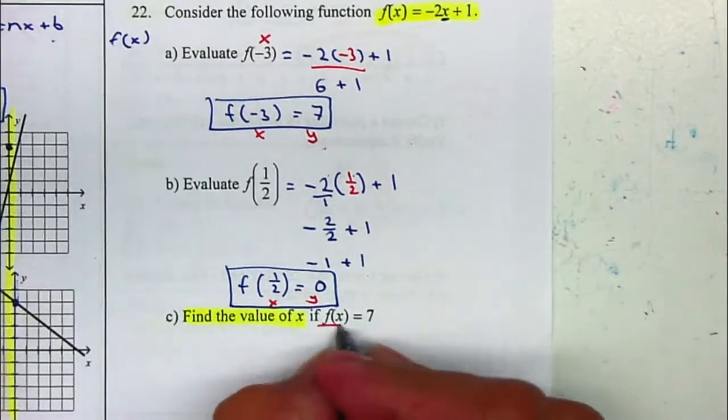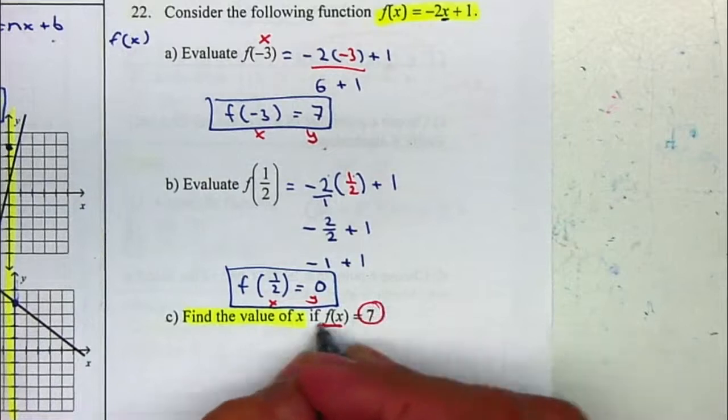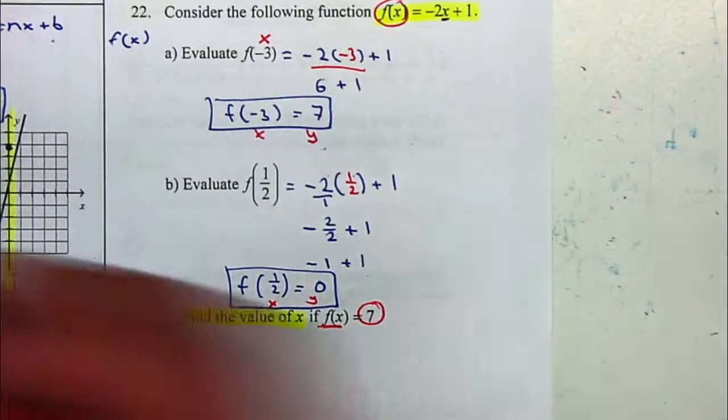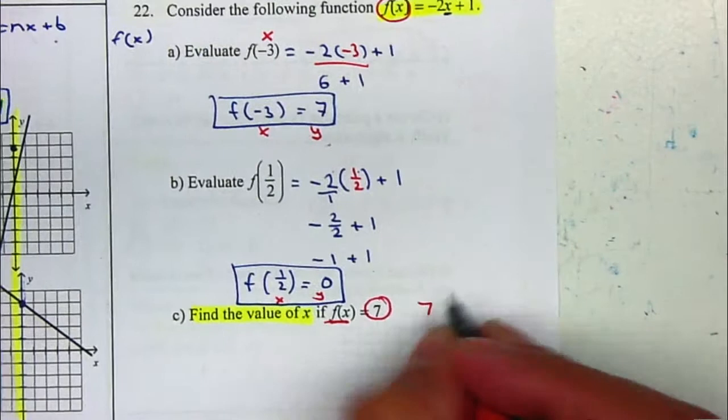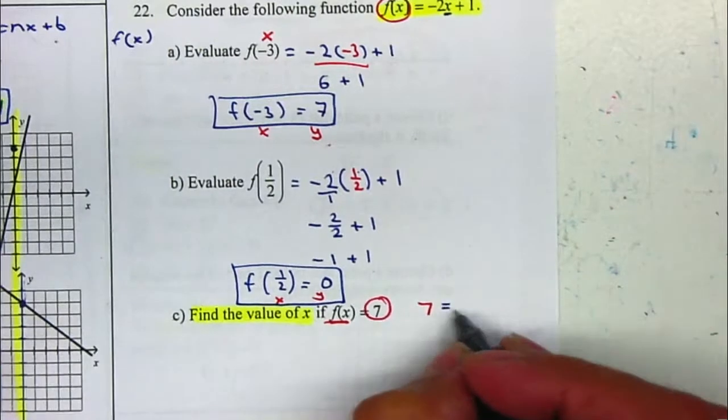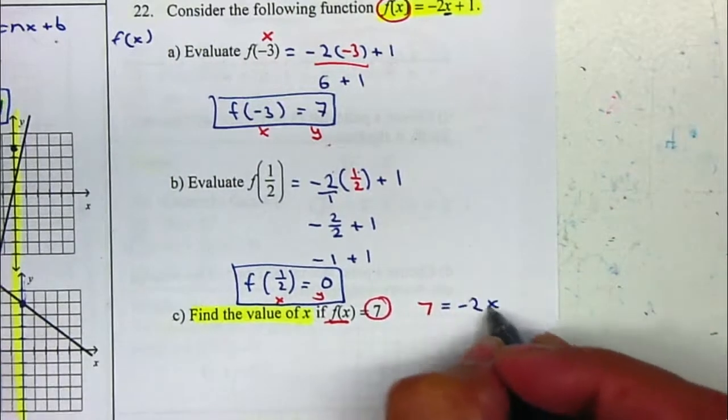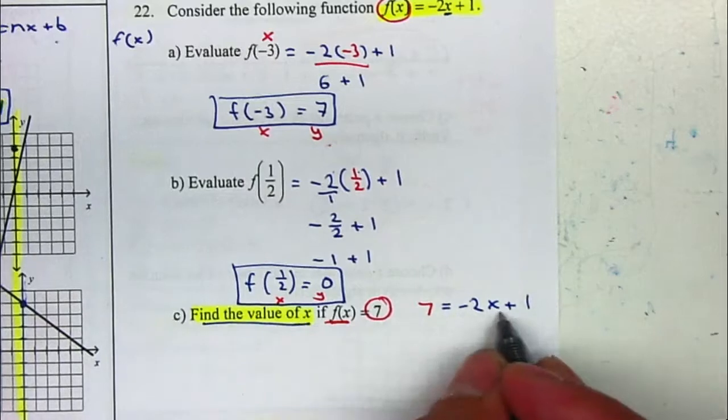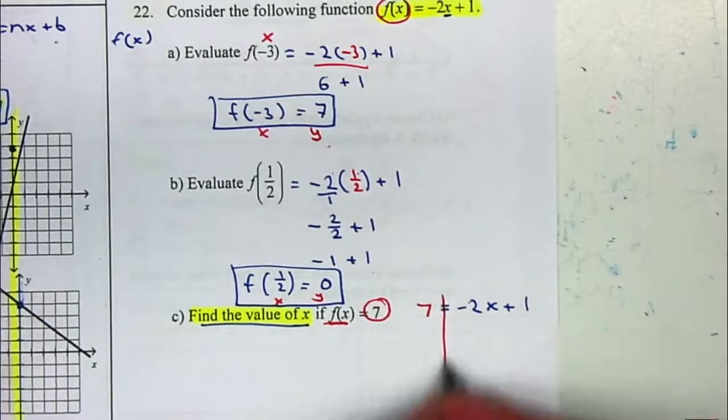Therefore, we're going to substitute f of x with 7. So instead of writing f of x, we're going to replace it with 7. That will be 7 equal to negative 2x plus 1. We're looking for the value of x, so I need to leave the x there. And from there, we just solve the equation.